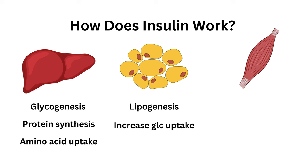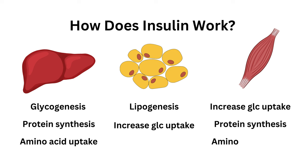At the level of the muscle, insulin again increases glucose uptake, protein synthesis, and amino acid uptake. Basically, you take that glucose right out of the blood and put it elsewhere in the form of protein and fat in order to decrease the glucose in the blood. So for people interested in weight loss, you want to try and keep those insulin levels low in your blood to stop lipogenesis.